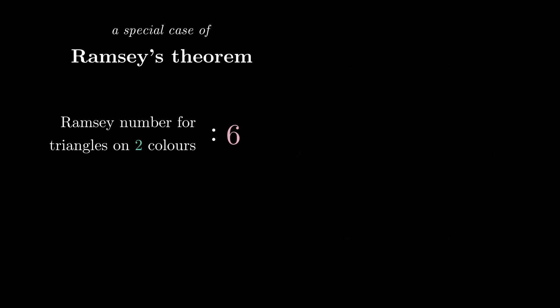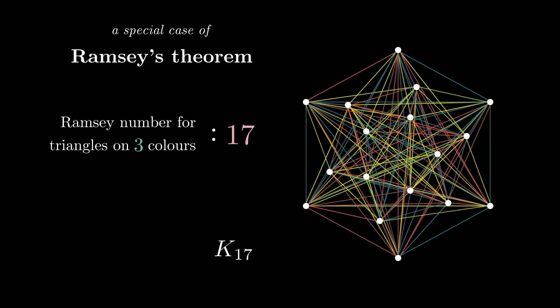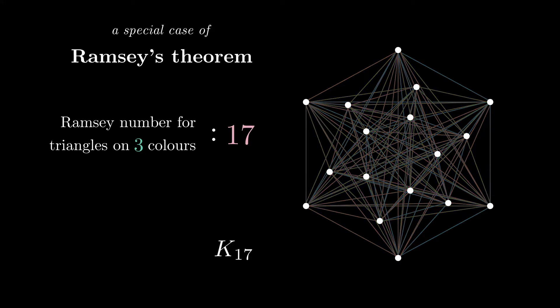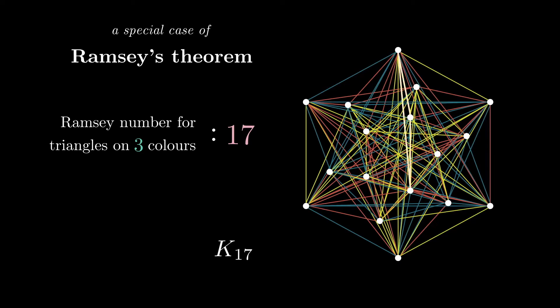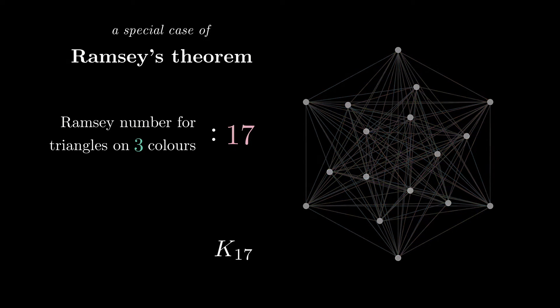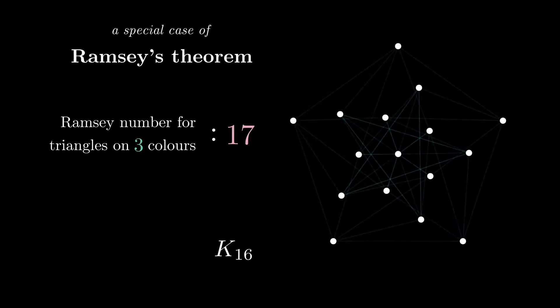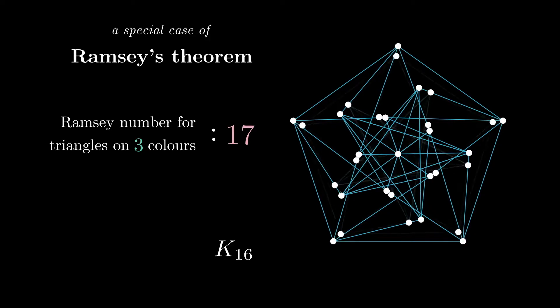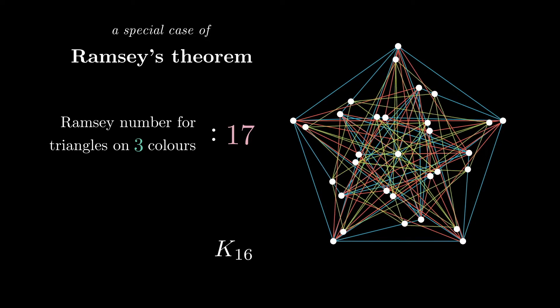With three colours, things get a fair bit harder. The minimal graph size is now 17. Indeed, another counting argument will reveal that monochromatic triangles will always appear in order 17 or more, if you only use three colours. But on the other hand, there is a clever method for colouring k16 with three colours without monochromatic triangles.